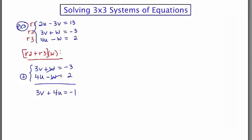Now, if I look at the top row, which I haven't worked with yet, that's also in v and u. It's written backwards in u and v, but that doesn't matter. We can switch the order. So I'm going to take row 1, and I'm going to reverse the order. So this becomes negative 3v plus 2u is equal to 13. If I add now, the v's cancel out, and I'm left with 6u is equal to 12. So u is equal to 2.